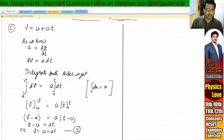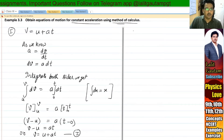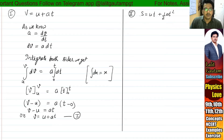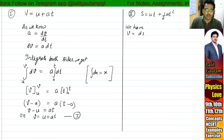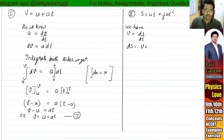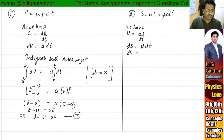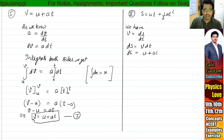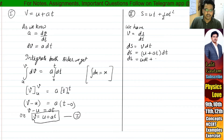Now the second equation of motion. The second equation of motion is S equal to Ut plus half At squared. Now we are going to derive this relation. We have the formula: velocity is equal to dS by dt — the instantaneous velocity equals the rate of change of displacement. So dS is equal to V dt, which gives dS equal to U dt plus At dt.